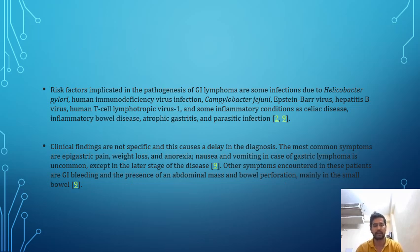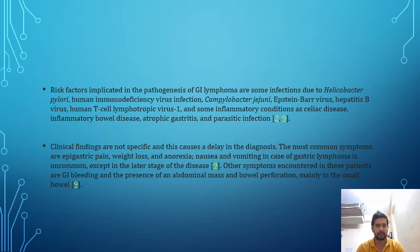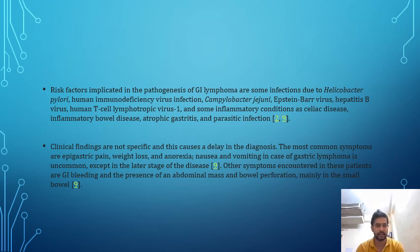The main etiologic factors for gastrointestinal lymphomas include different viruses like Helicobacter pylori, Human Immunodeficiency Virus, Campylobacter jejuni, Epstein-Barr virus, Hepatitis B, and Human T-cell Lymphotropic Virus 1. Inflammatory conditions such as celiac disease, IBDs like Crohn's or ulcerative colitis, atrophic gastritis, and parasitic infections are also factors.